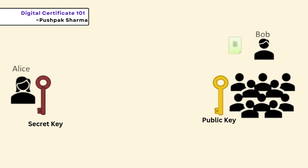Here's a quick example. Alice has a private key, and the group including Bob has her public key. If Bob encrypts a message using the public key, only Alice can decrypt it with her private key. No one else in the group can read it, ensuring the message goes to the right person.